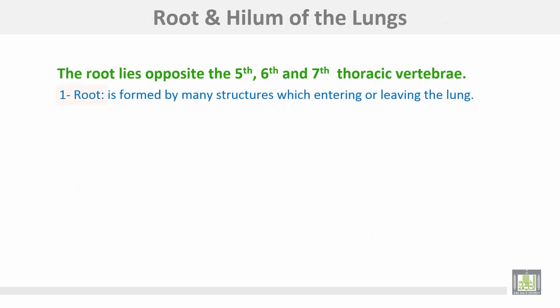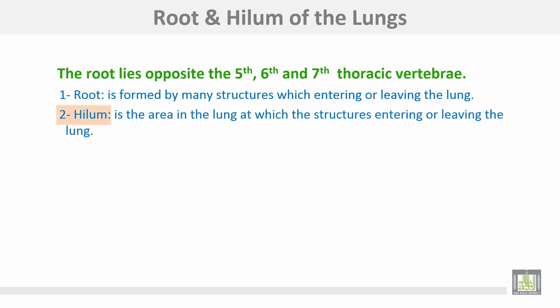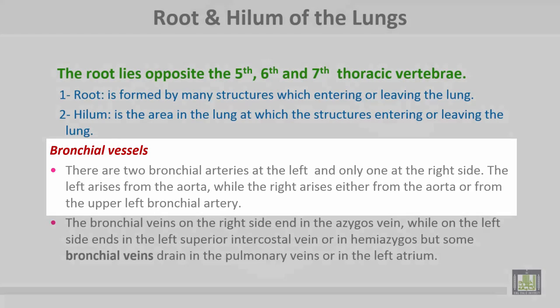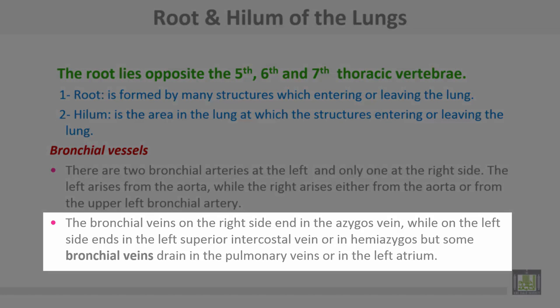Root or hilum of the lung: the root lies opposite the 5th, 6th, and 7th thoracic vertebrae. The root is formed by many structures entering or leaving the lung. The hilum is the area on the lung at which structures enter or leave the lung. Bronchial vessels: there are two bronchial arteries on the left and only one bronchial artery on the right side. The left arises from the aorta, while the right arises either from the aorta or from the upper left bronchial artery. The bronchial veins on the right side drain into the azygos vein, while on the left side they drain into the left superior intercostal vein or into the hemi-azygos, but some bronchial veins drain into the pulmonary veins or into the left atrium.